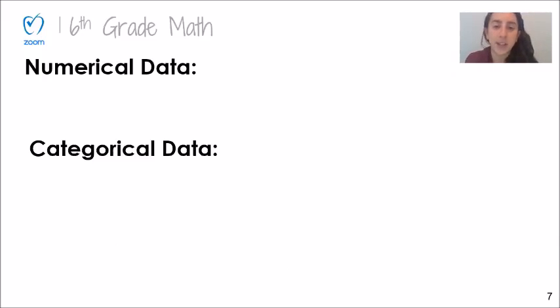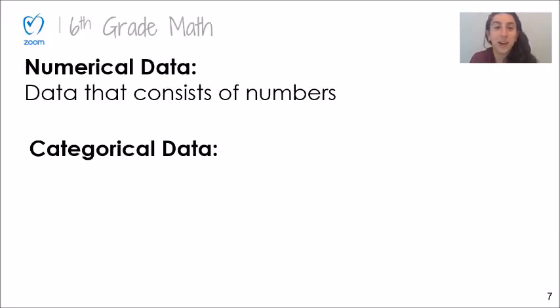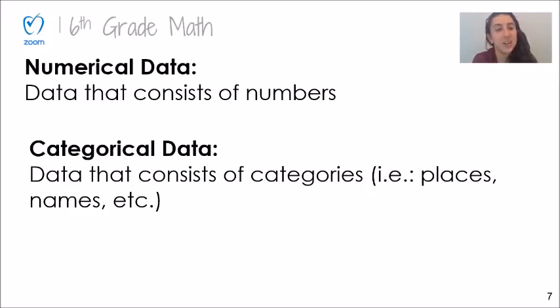Now that you had some practice identifying statistical and non-statistical questions, there's one other distinction that we need to talk about when looking at data. And that's the difference between numerical data and categorical data. It's pretty much what they sound like. Numerical data is data that consists of numbers. Categorical data, you guessed it, is data that consists of categories. So they might be words like places, names, colors—anything that's not a number.